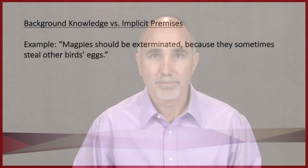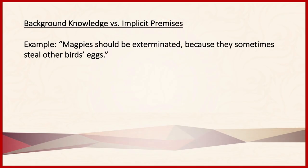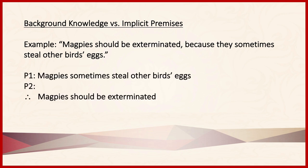Let's consider an example. Magpies should be exterminated because they sometimes steal other birds' eggs. It's very helpful to begin by putting an argument like this in standard form. Notice that there's one premise and a conclusion. A temptation might be to include something like the following: magpies are birds. While the arguer certainly assumes this to be true, notice that this does nothing to close the logical gap between the premise and the conclusion.